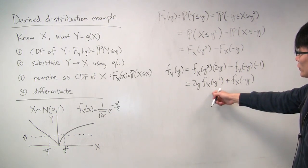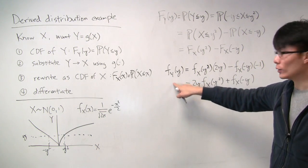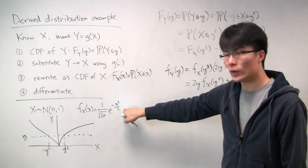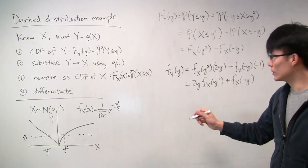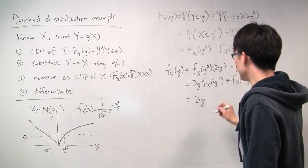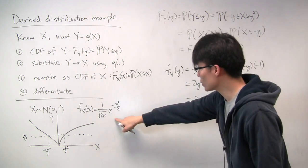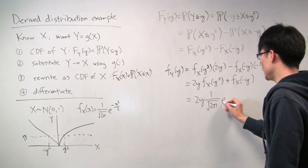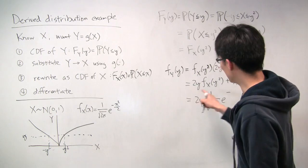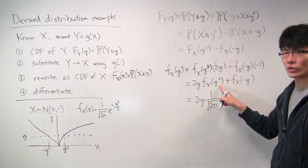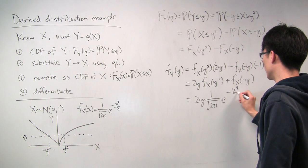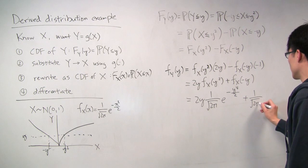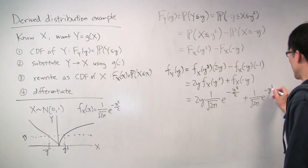We now have the PDF of y written in terms of the PDF of x, which we know. Plugging in the normal PDF: f_x evaluated at y squared gives 1 over square root of 2π times e to the minus y⁴ over 2 (since x equals y squared). And f_x evaluated at negative y gives 1 over square root of 2π times e to the minus y squared over 2.